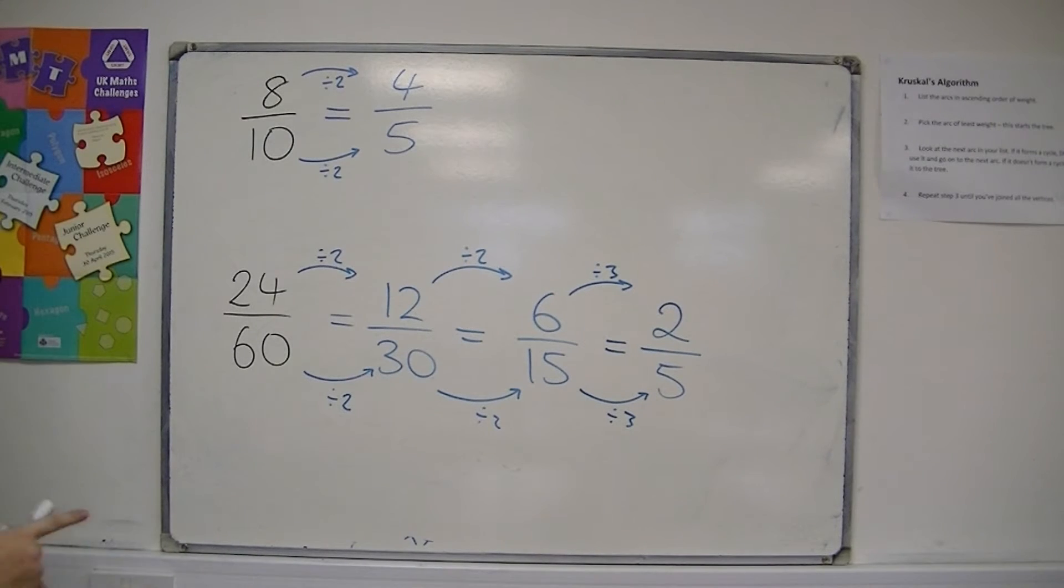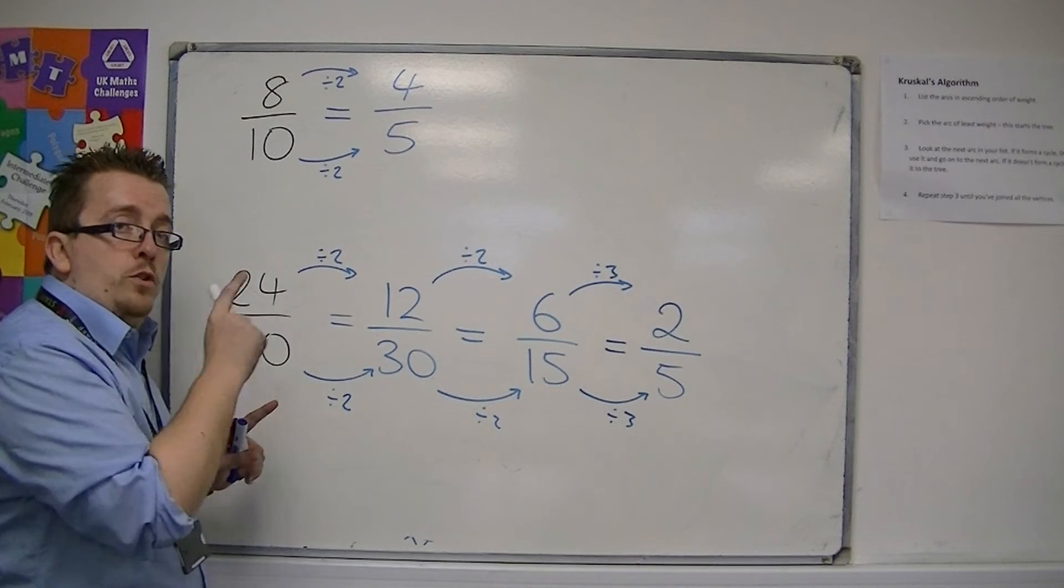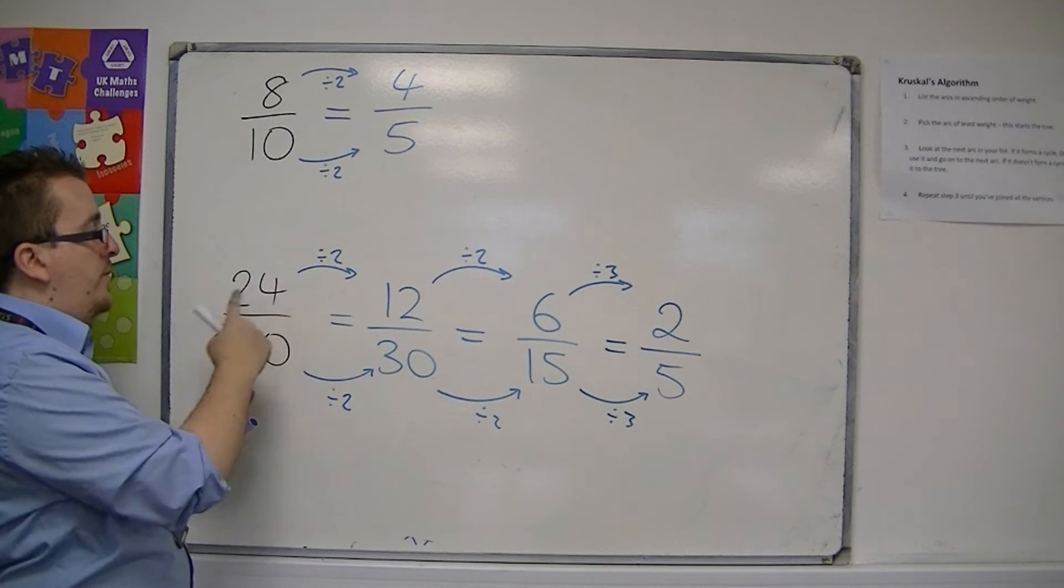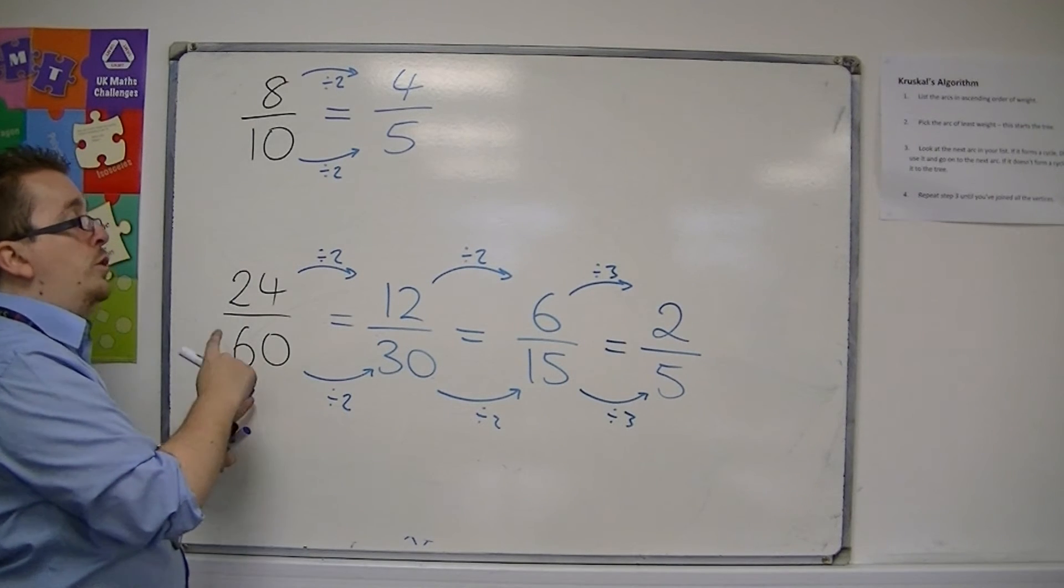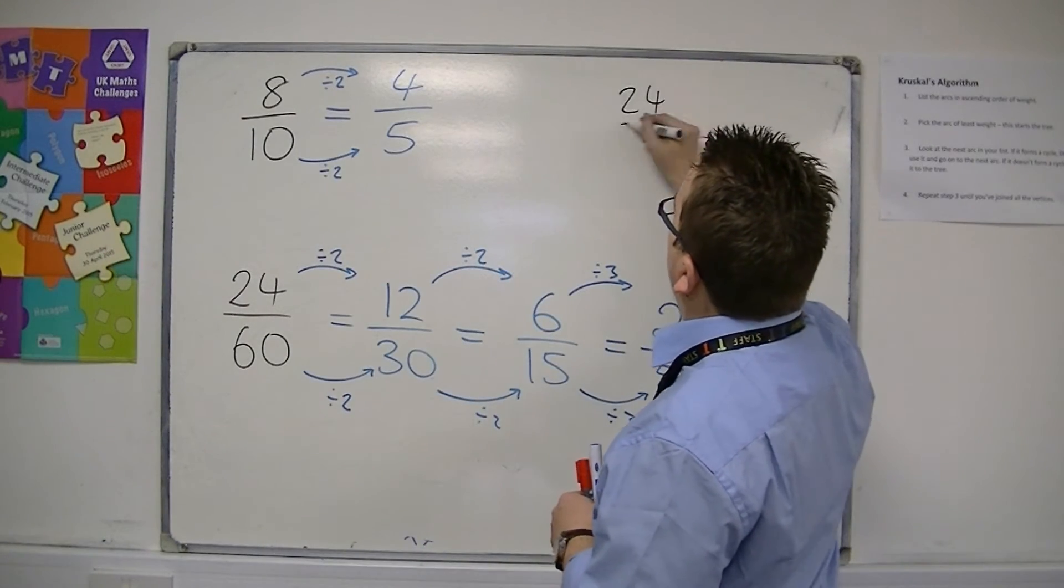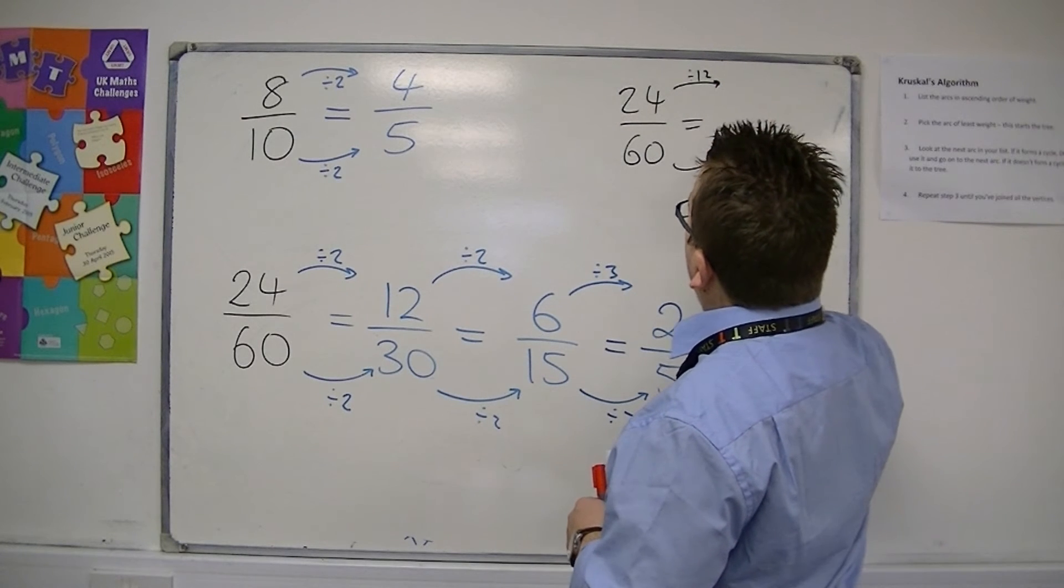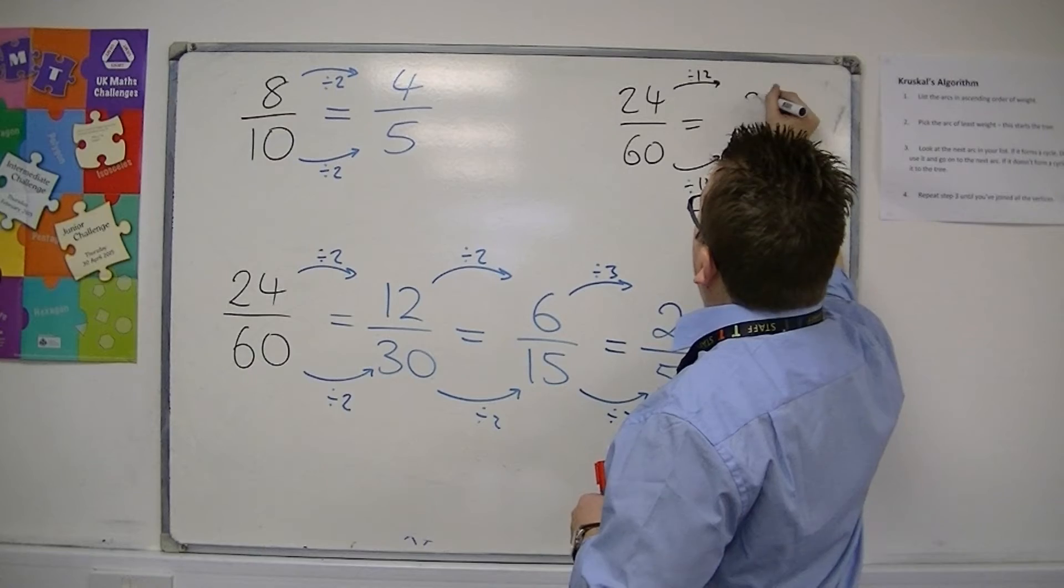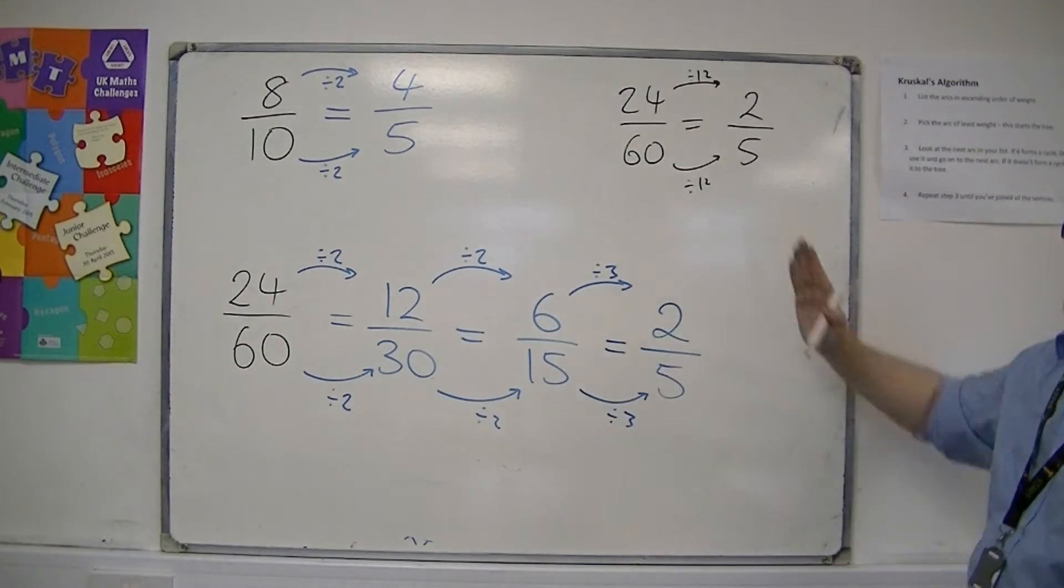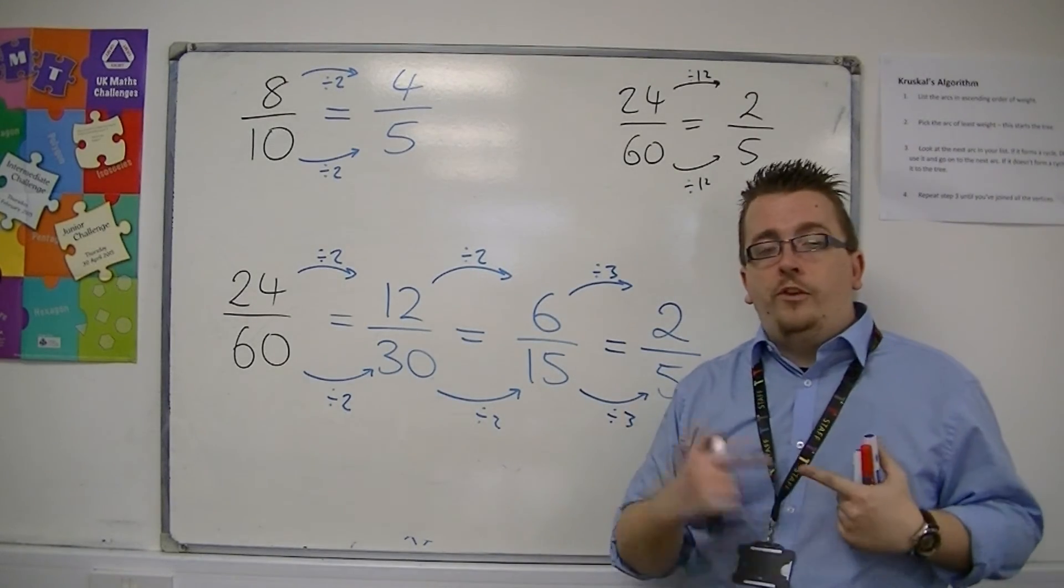Now, you might be asking, well, okay, if I'd started at 24 over 60, you could have gone straight to dividing through by 4, or dividing both top and bottom by 3, or you could have divided top and bottom by 12. Because you could start with 24 over 60 and divide top and bottom by 12 and get 2 over 5. So you go straight from 24 over 60 to 2 over 5 with that method.